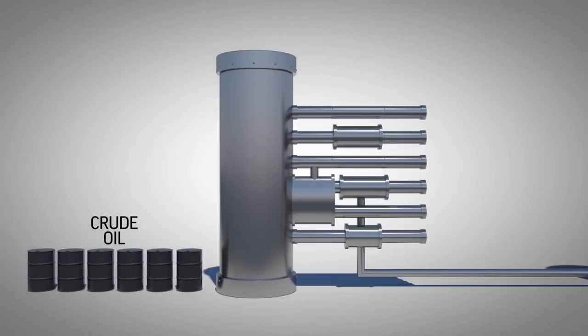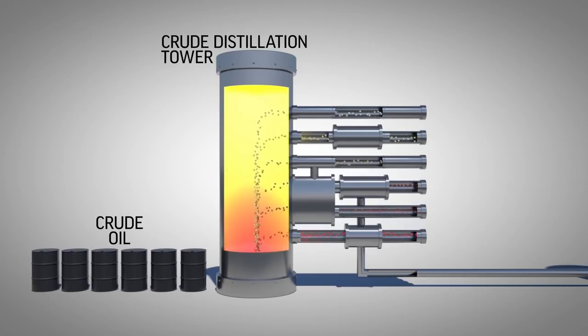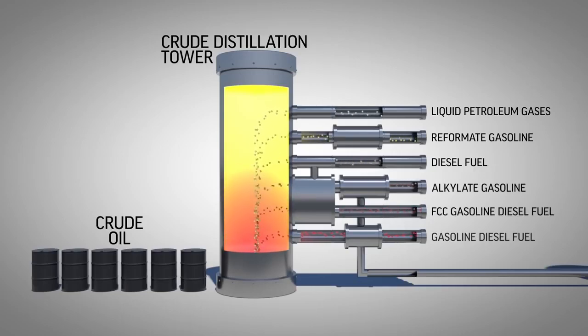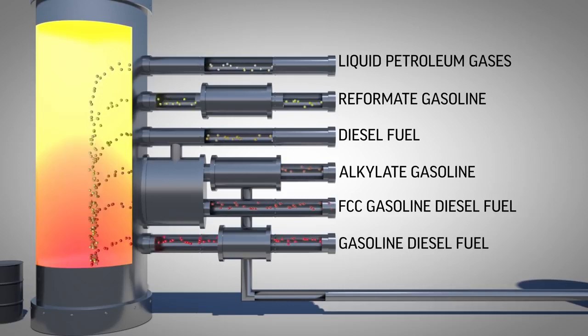At the refinery, crude oil is heated and pumped into a distillation tower where the oil is vaporized. Gases from the crude's components cool at different temperatures before condensing into fuels such as gasoline, diesel, and jet fuel. Those liquids are drawn off at various heights and sent to other processing units.